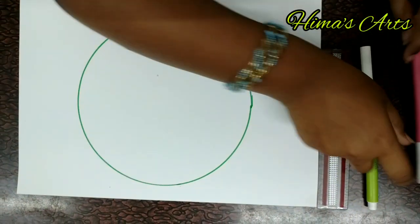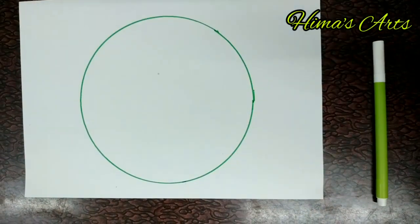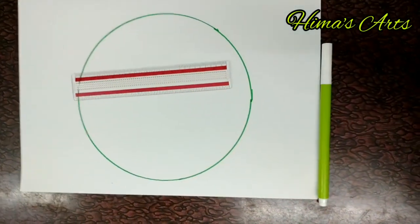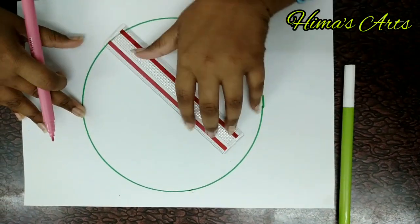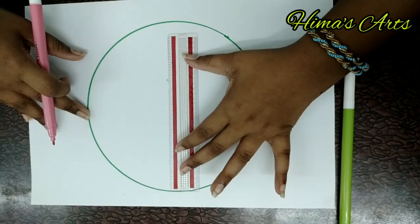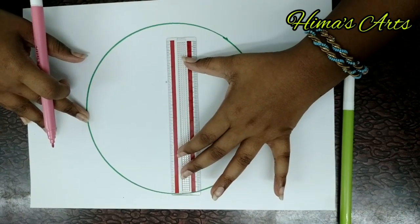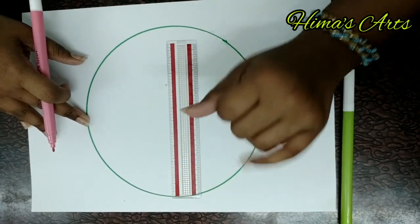Now take a pink colored sketch pencil and a scale, and divide the circle into two parts.